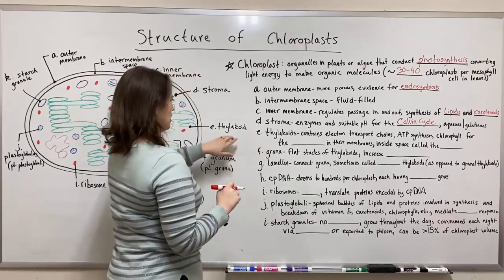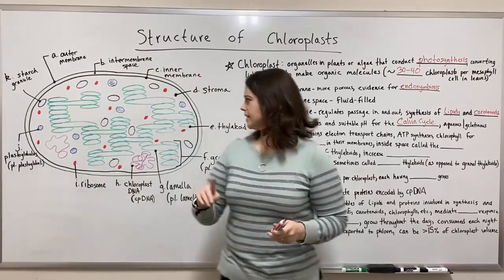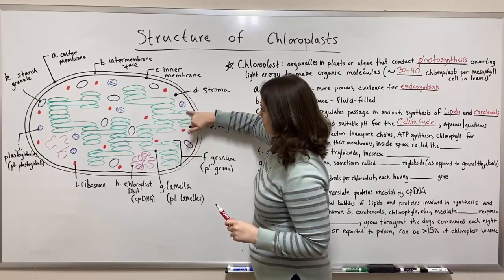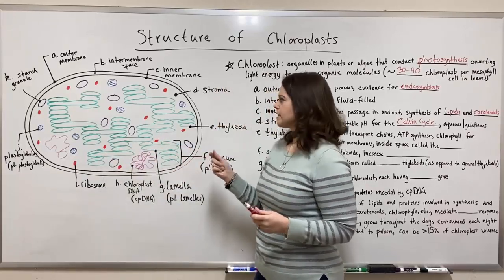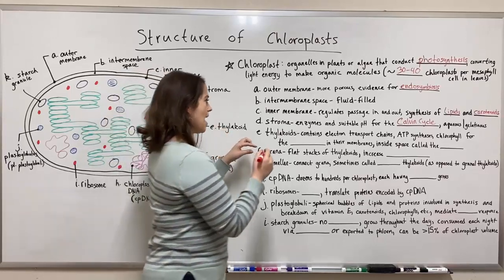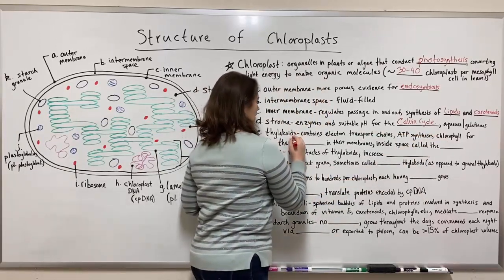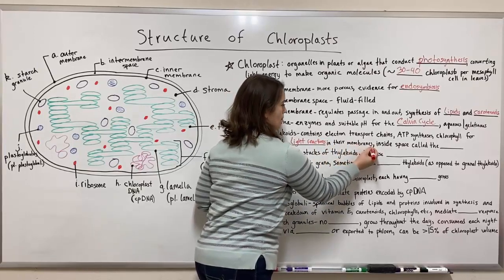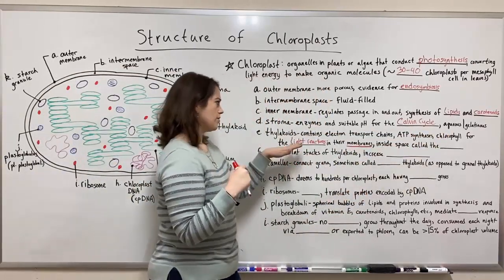Next we'll talk about the thylakoids — singular: thylakoid, plural: thylakoids. Each one of the structures I've drawn in green is a thylakoid. These are fluid-filled sacs and they contain the electron transport chains, ATP synthases, and chlorophyll for the light reactions of photosynthesis — specifically embedded in their membranes. The membranes of the thylakoids hold all of these necessary components to drive the light reactions, sometimes also called the light-dependent reactions, which are the part of photosynthesis that precedes the Calvin cycle.